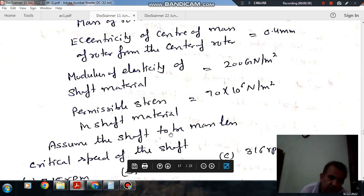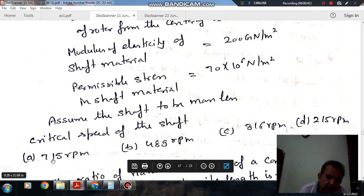Assume shaft to be massless. Find critical speed of the shaft. Option A: 715 rpm. Option B: 418 rpm. Option C: 316 rpm. Option D: 215 rpm.